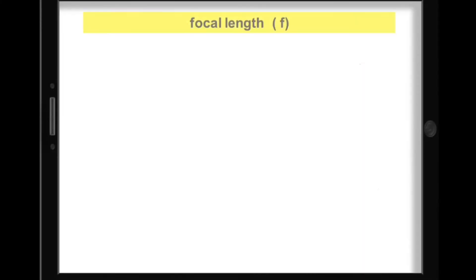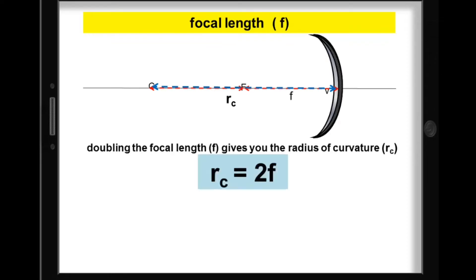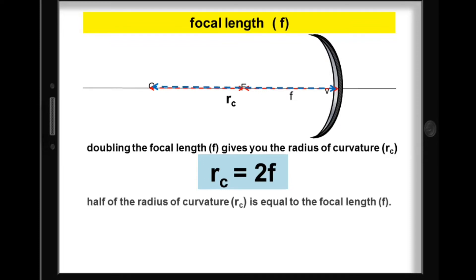Here's another important thing: the radius of curvature equals twice the focal length — R = 2f. Or equivalently, the focal length equals the radius of curvature divided by 2 — f = R/2.